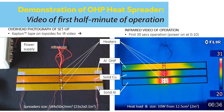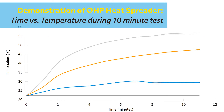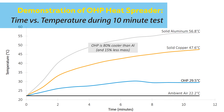The OHP is able to prevent hot spots from forming by spreading the heat through its internal fluidly charged micro channels that transfer heat by both convection and phase change heat transfer.